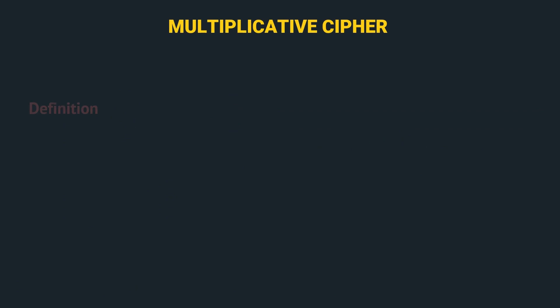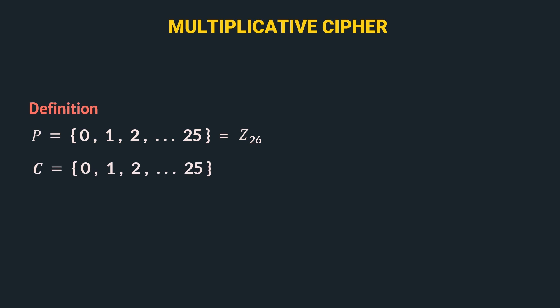Let's start with the mathematical definition. Here the plain text P takes the integer value from 0 to 25, which we represent by Z26. The ciphertext C also takes the integer values from 0 to 25, which we represent by Z26. We have already covered this notation in the modular operator video.